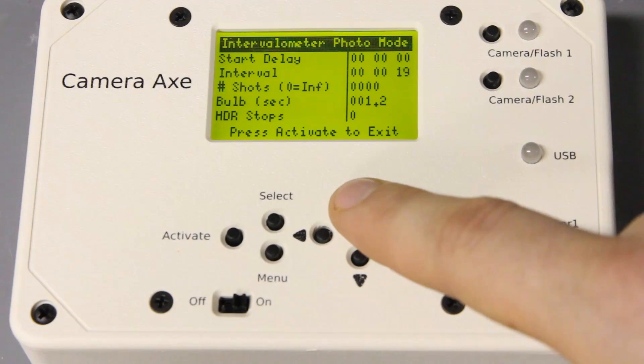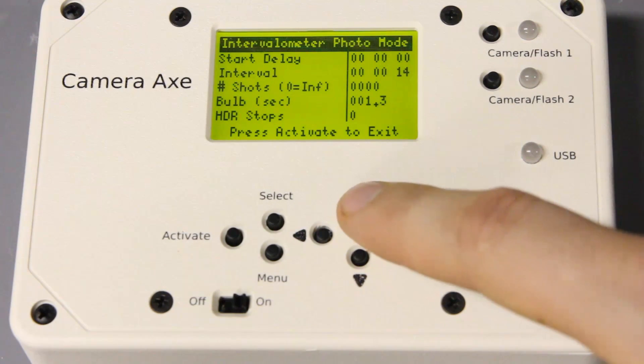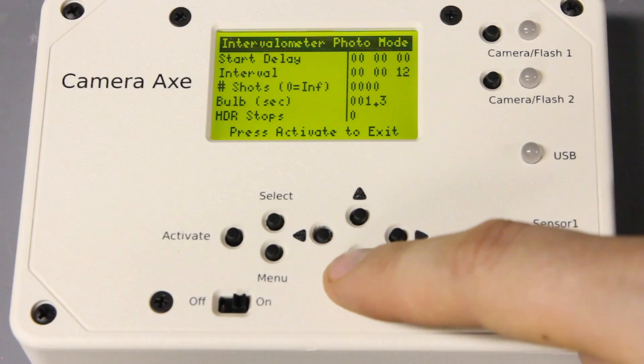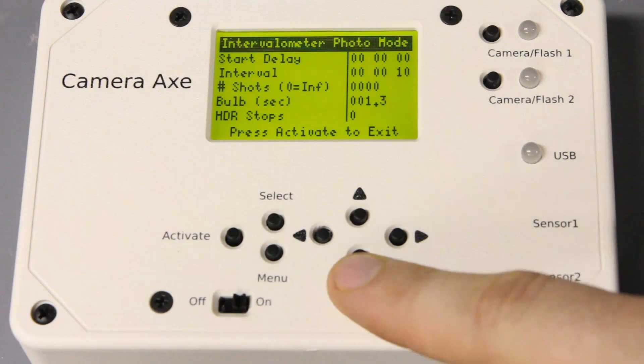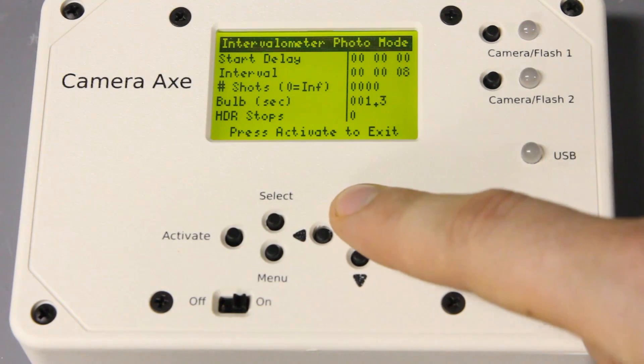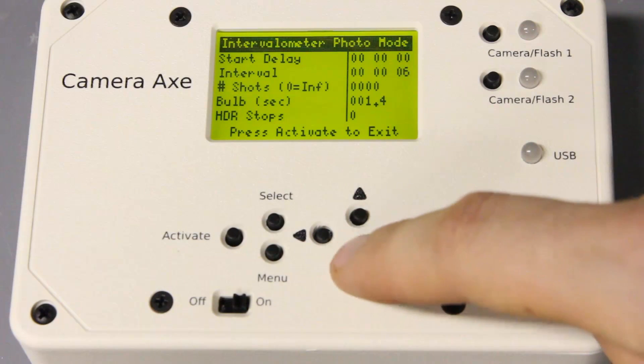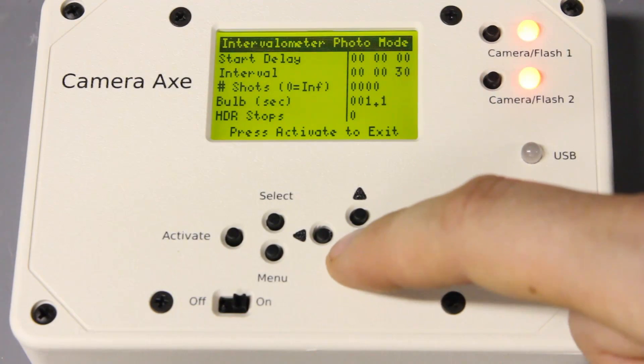This is something that's called bramping or bulb ramping, and the idea is that as the exposure changes that you're taking a photo of, the user can control how long their bulb duration is. This could be pretty useful for sunsets and that sort of thing.